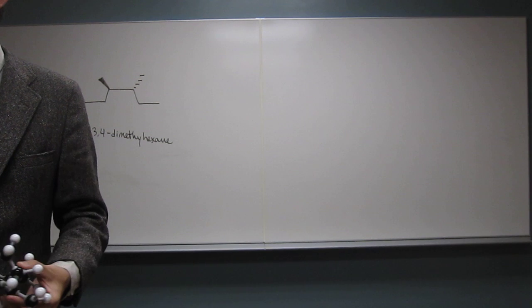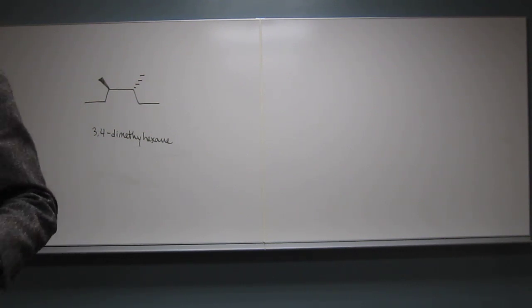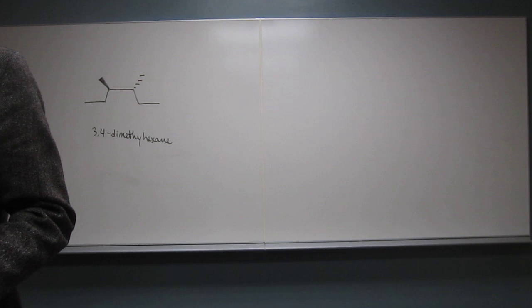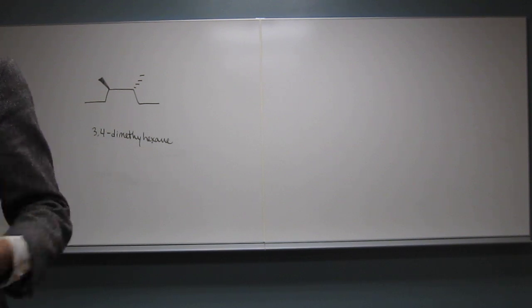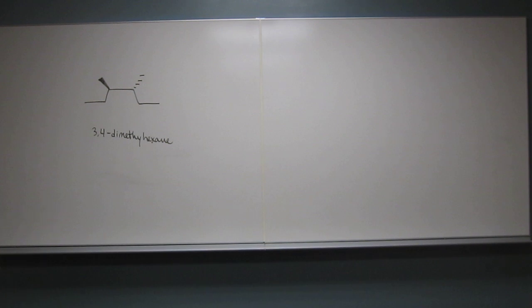So the cis-trans prefixes for the different isomers of cycloalkanes don't work for the just the acyclic alkanes, okay? Does that make sense? Yes. Okay, wonderful.